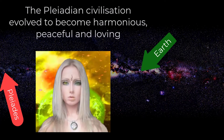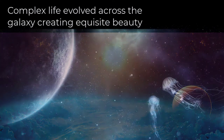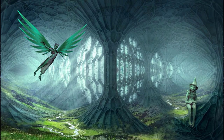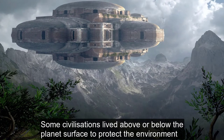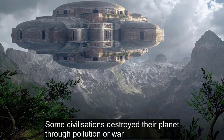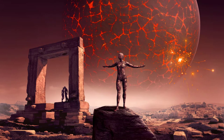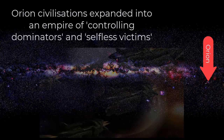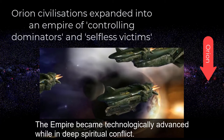The Pleiadian civilisation evolved to become harmonious, peaceful and loving. Complex life evolved across the galaxy, creating exquisite beauty. Some civilisations lived above or below the planet's surface to protect the environment, while other civilisations destroyed their planet through pollution or war. Orion's civilisations expanded into an empire of controlling dominators and selfless victims, becoming technologically advanced while in deep spiritual conflict.